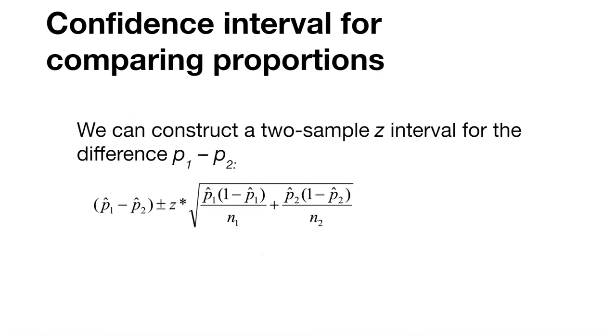Here's an example of confidence interval for comparing proportions. We can use the Z table again, going back to looking at the difference between P1 and P2, or P1 hat and P2 hat. We're going to look at the difference, and that's going to be plus or minus. Remember, we're looking at an interval, we need a lower value and an upper value. We're going to find our value Z star from the Z table, and this is the standard error of the difference between the two different populations.